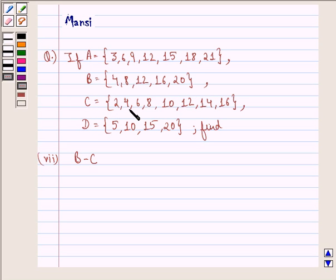C equals to the set 2, 4, 6, 8, 10, 12, 14, 16, and D equals to the set 5, 10, 15, 20, then find the 7th part, that is B minus C.